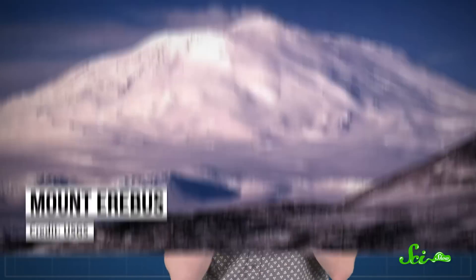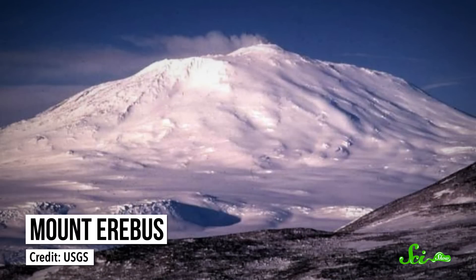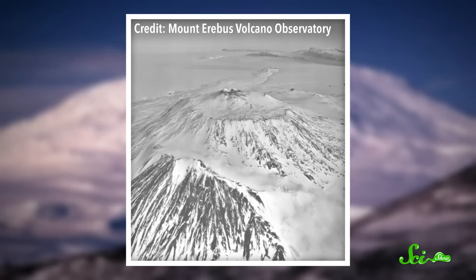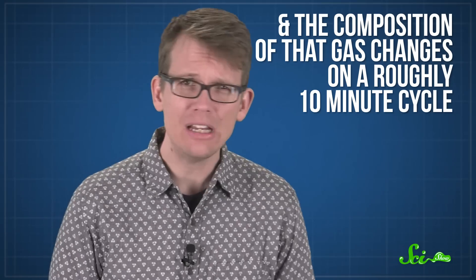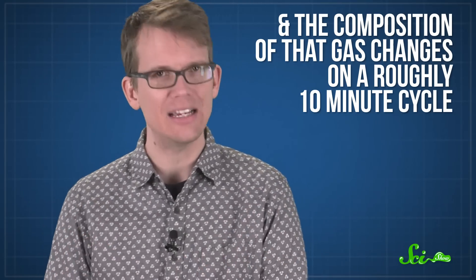Permanent lava only exists in a few places around the globe. One of the strangest lava lakes is atop Mount Erebus, on the frozen continent of Antarctica. Probably the weirdest thing about this lake is that it's constantly releasing gas, and the composition of that gas changes on a roughly 10-minute cycle.